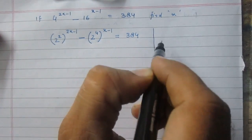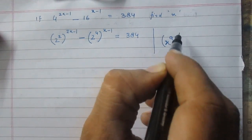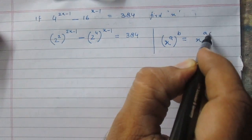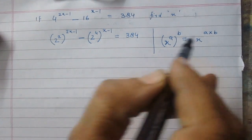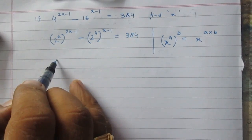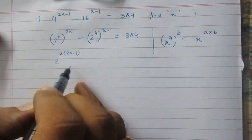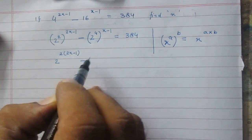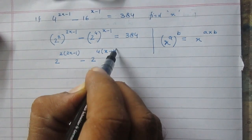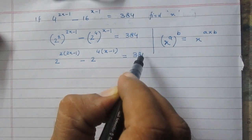We know that according to the laws of exponents, x raised to the power a raised to the power b is equal to x raised to the power a times b. Using this rule, we can write the first part as 2 raised to the power 2 multiplied by (2x minus 1), minus 2 raised to the power 4 multiplied by (x minus 1), equal to 384.